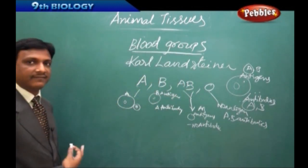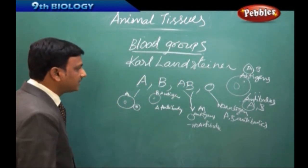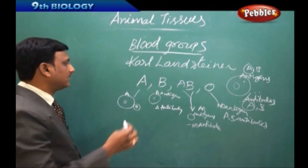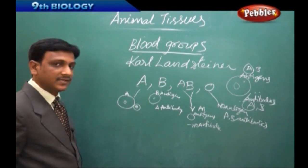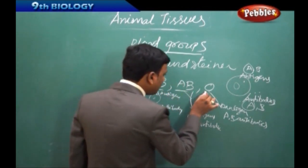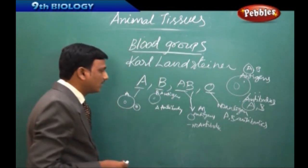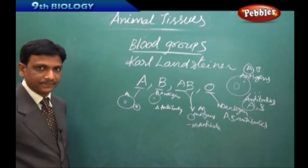These are the variations based on which blood groups are categorized. So A, B, AB, and O are the different blood groups.